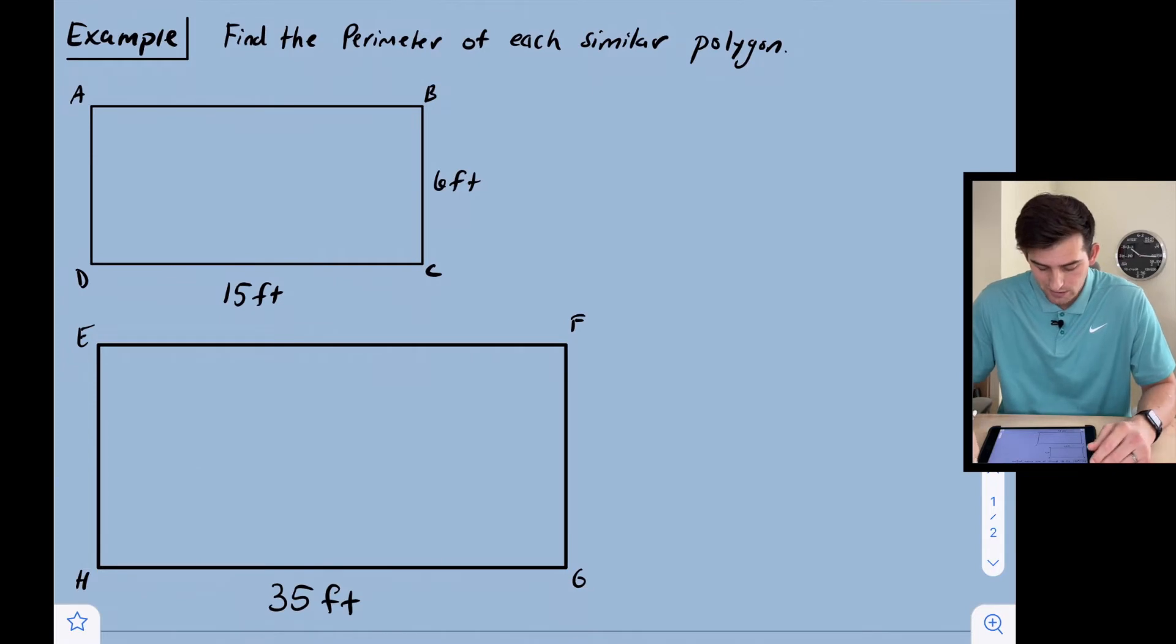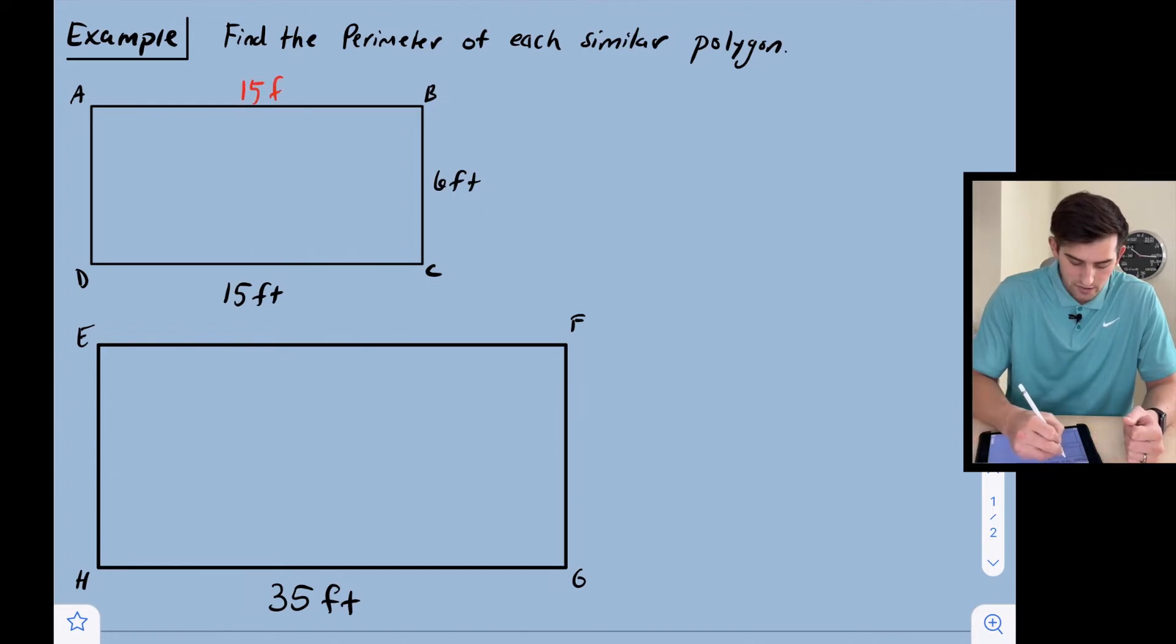Let's look at one example here. It says find the perimeter of each similar polygon. We know that our first rectangle ABCD already has the length and the width, so for the perimeter of a rectangle that would be 15 and 6.